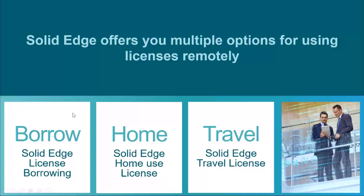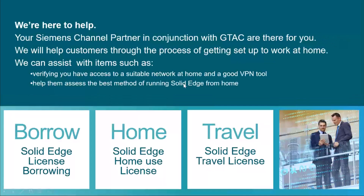We're going to talk about each of these in detail, but before we do, I just want you to know we're here to help. Your channel partner and Siemens is behind you helping you work from home. If you have any issue with any of these licenses or can't get them to work, we'll give you an emergency license to help tide you over. Call your channel partner for support and they'll get in touch with us.